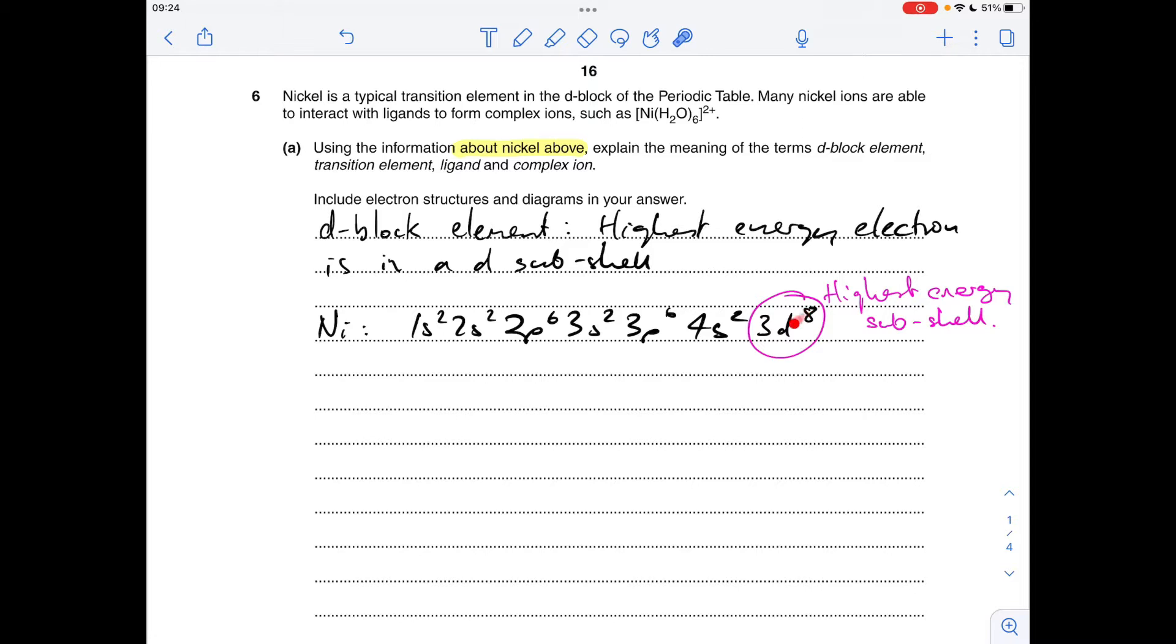Moving on to transition element, that's defined as an element that forms at least one ion with an incomplete d sub-shell. Because they've referenced nickel 2+ in the information, I'm going to link my answer to that. Remember, when transition elements form their ions, we lose the 4s electrons first. For nickel 2+, we're going to lose the 4s² electrons, which gives us that as the electron configuration for the Ni²⁺ ion. The 3d sub-shell can hold up to 10 electrons, it's only got 8, so it is incomplete.